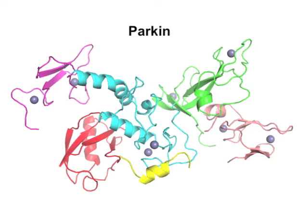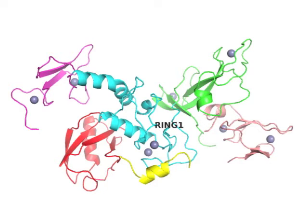The Parkin protein forms a compact structure of 10 nanometers in diameter — that is, one hundred thousandth of a millimeter. Its structure consists of five parts or domains named UBL, RING0, RING1, IBR, and RING2.